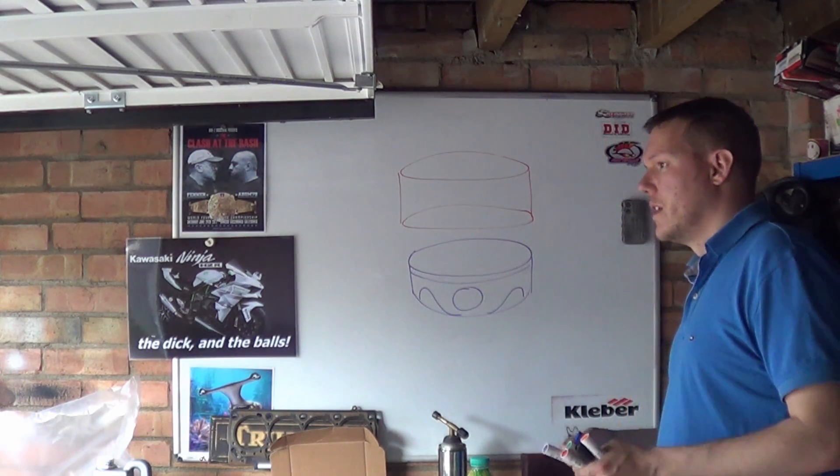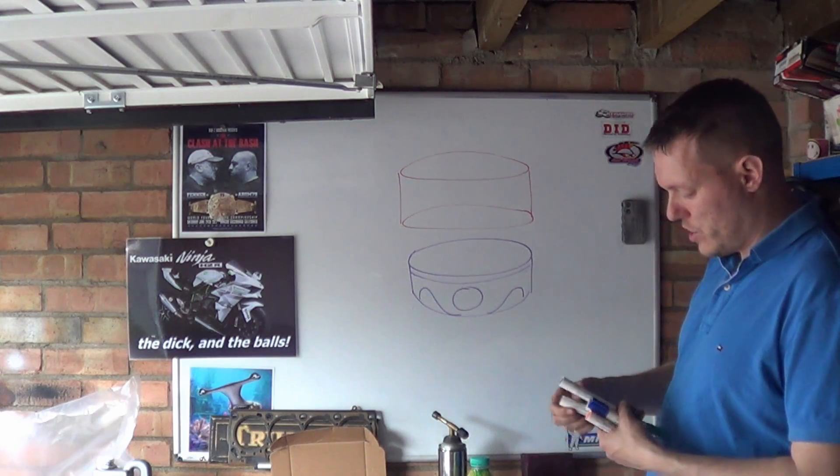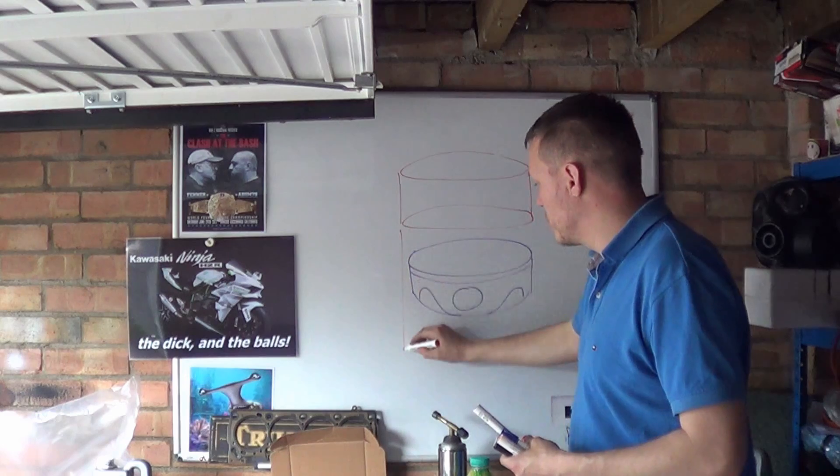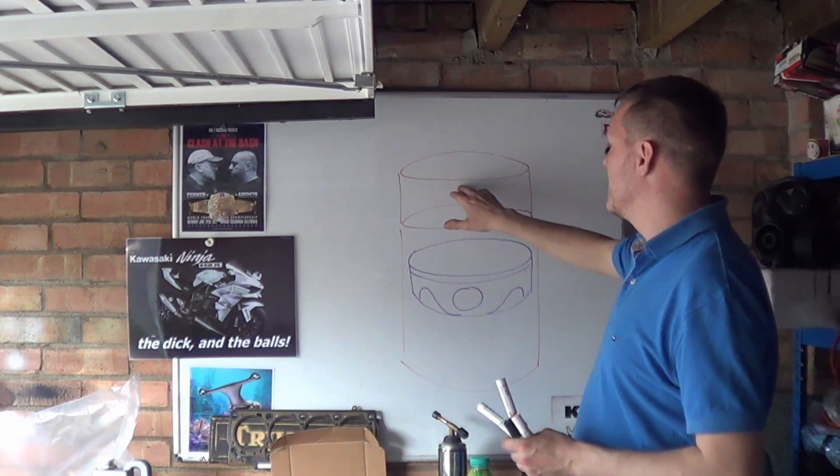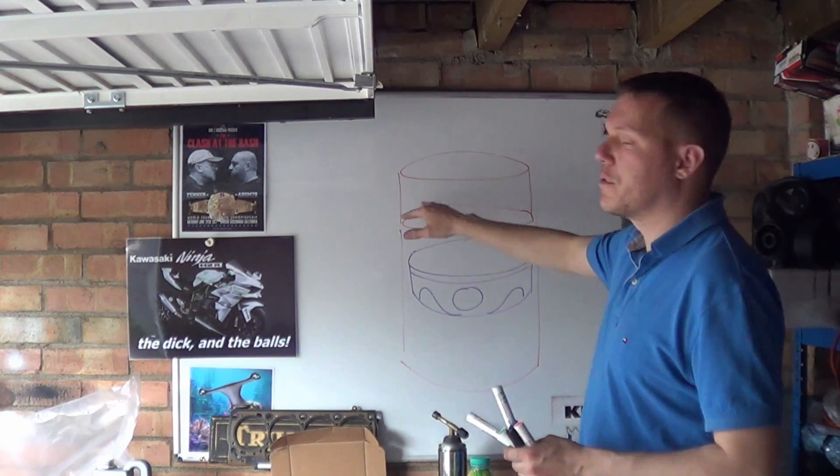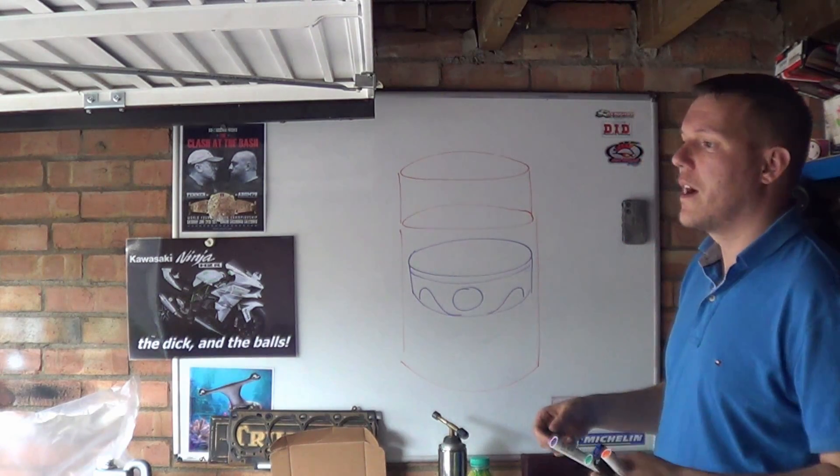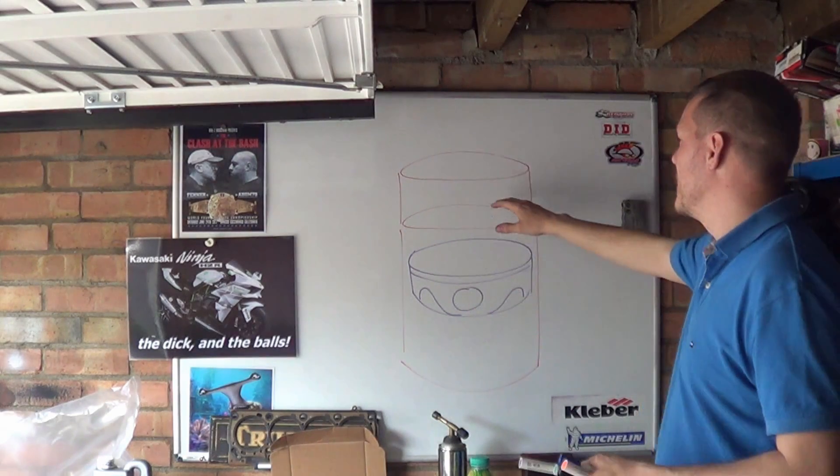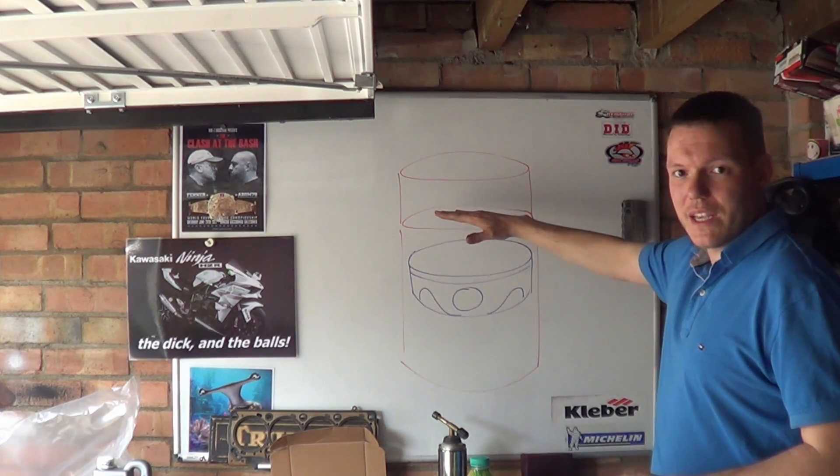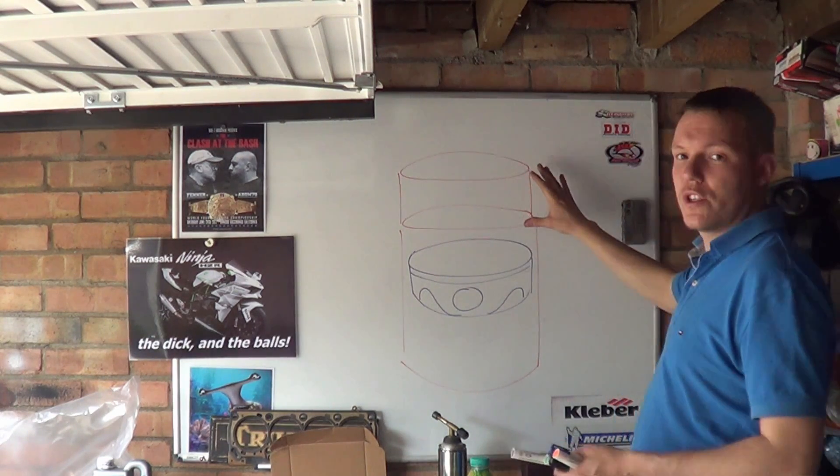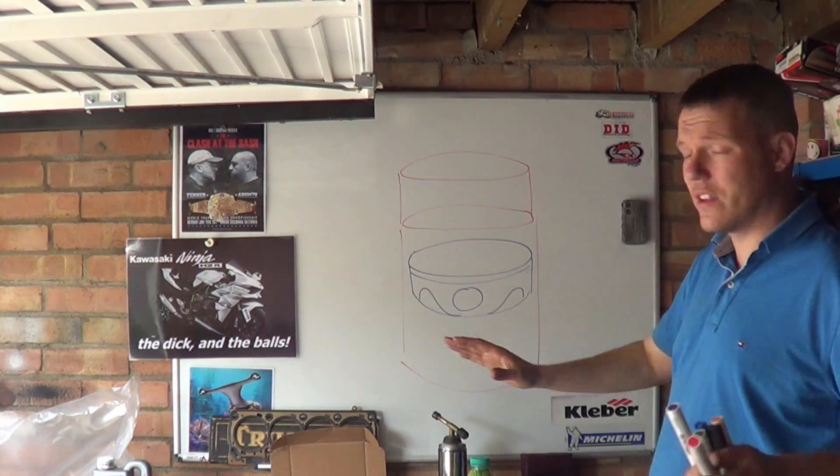It's not just that though. Imagine that we have a stroke - this is our swept volume, and this is our compression volume up at the top, or clearance volume. This ring here is where the piston gets to, and this is the entire combustion chamber when ignition occurs.